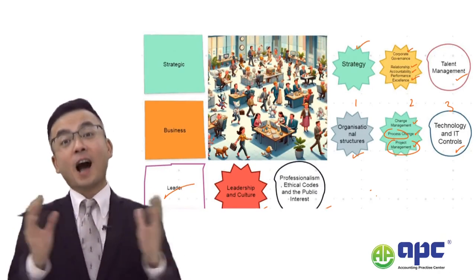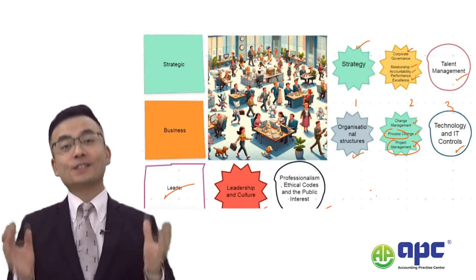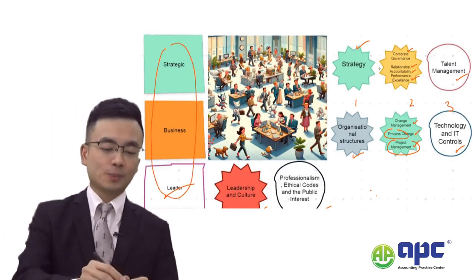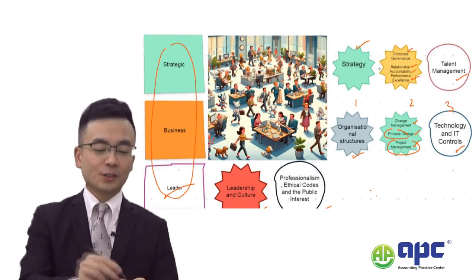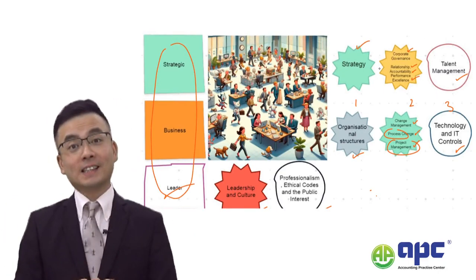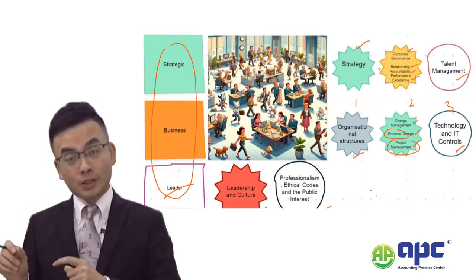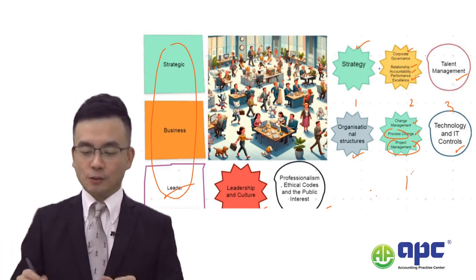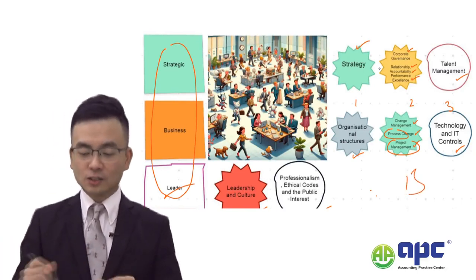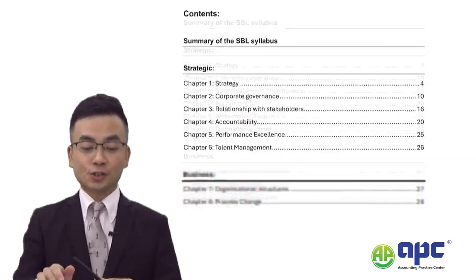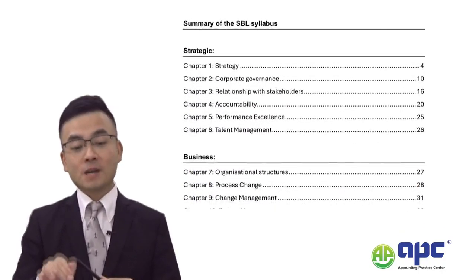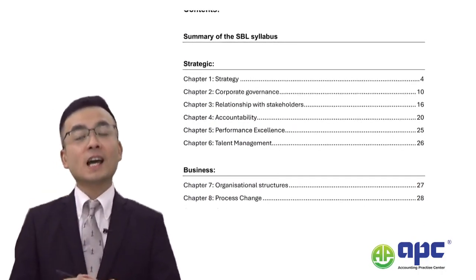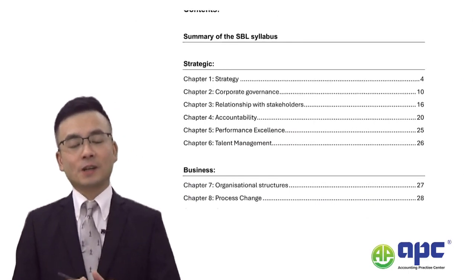I summarise all these three aspects — Strategic, Business, and Leader — broken down into 13 chapters that you should know, from my perspective, for the current SBL exam.